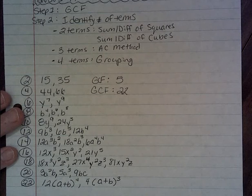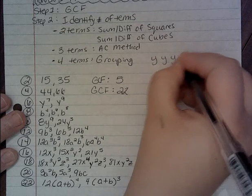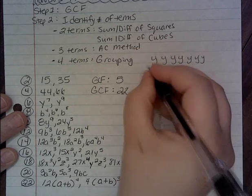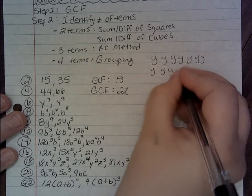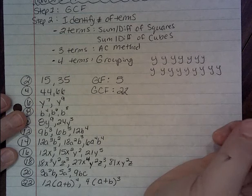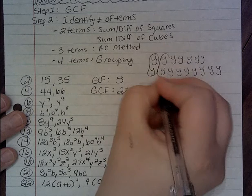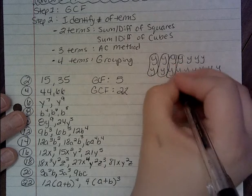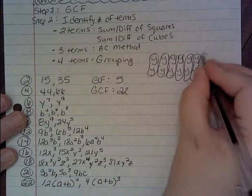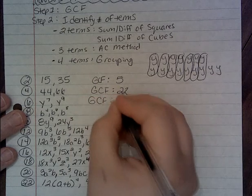Now I've got y to the 7th and y to the 9th. If I were to write y to the 7th out I would have 7 y's, and if I were to write out y to the 9th I would write 9 y's. We're trying to find out the biggest number of y's we can take from both groups. So your greatest common factor here would be y to the 7th.